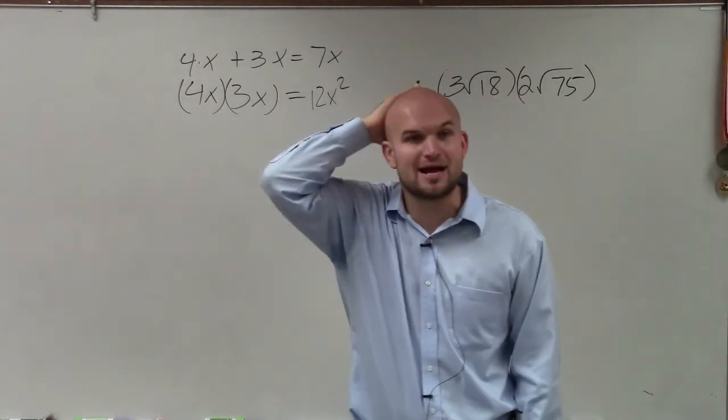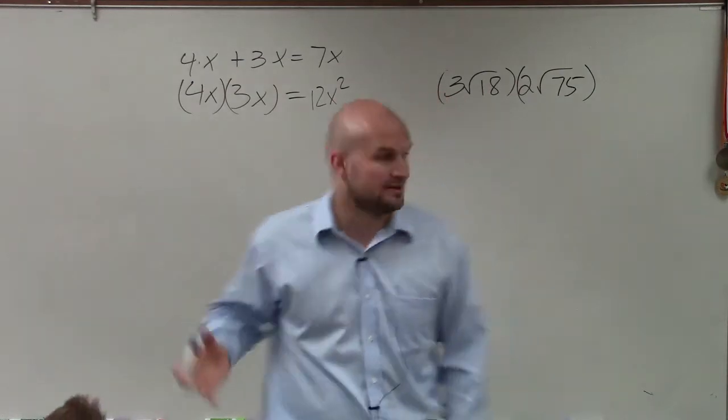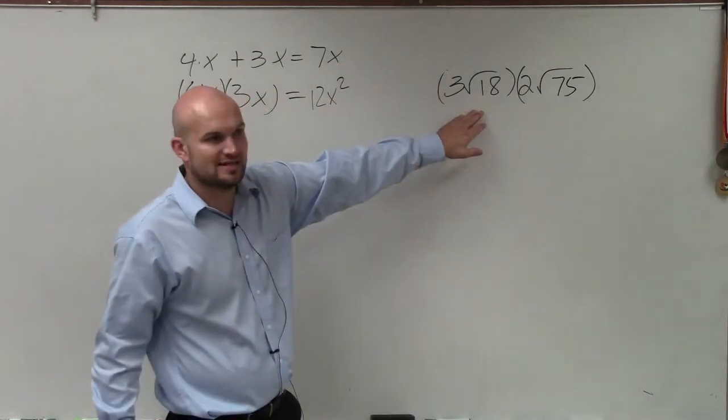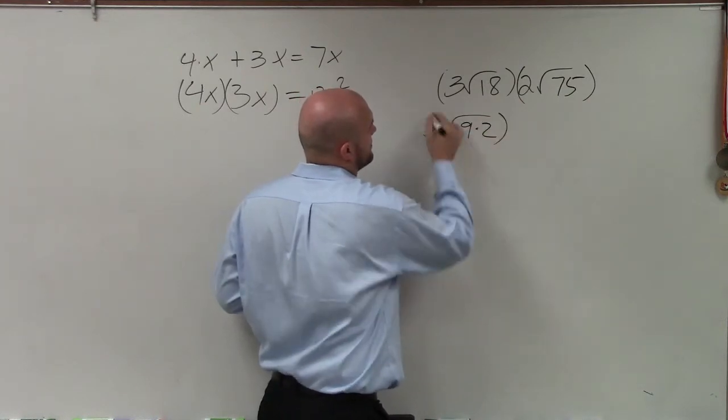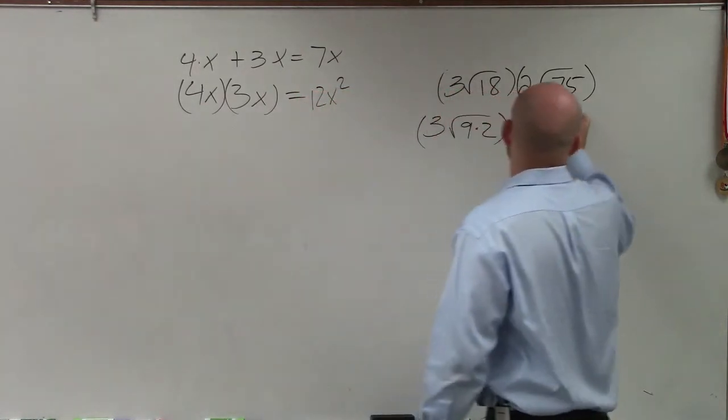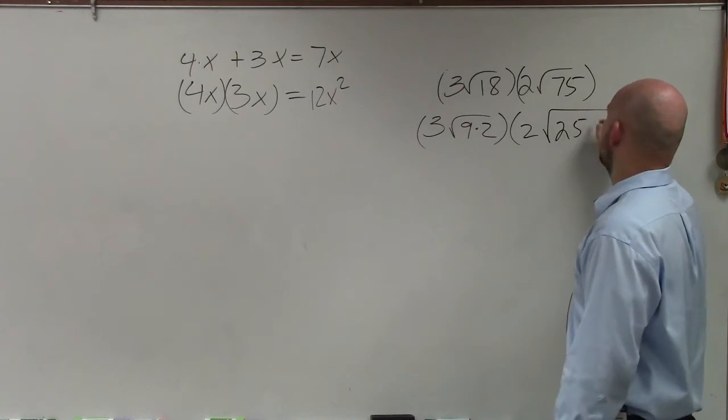So let's simplify square root of 18. The largest square number that we can rewrite this as 3 times square root of 9 times 2 times 2 times 25 goes into there, times 3.